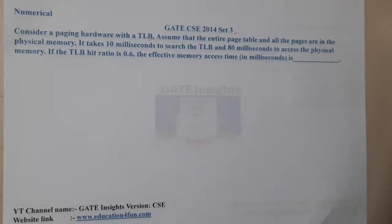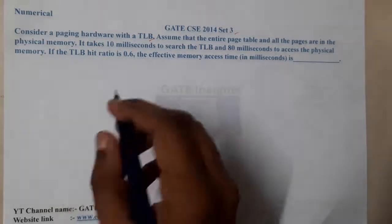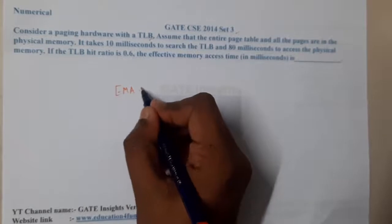It takes 10 milliseconds to search the TLB and 80 milliseconds to access the physical memory. If the TLB hit ratio is 0.6, the effective memory access time is calculated as the hit ratio into the time taken in terms of TLB.